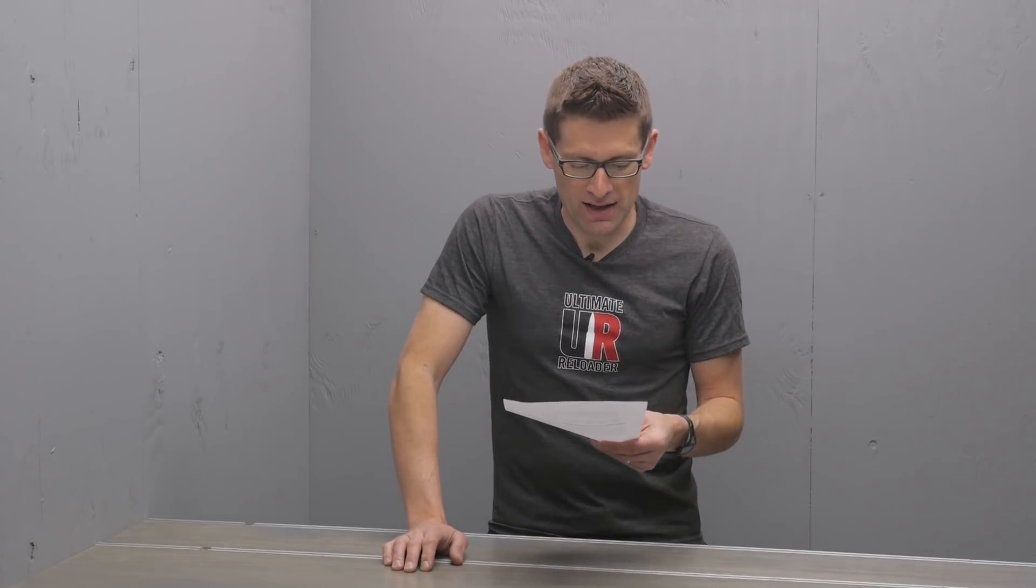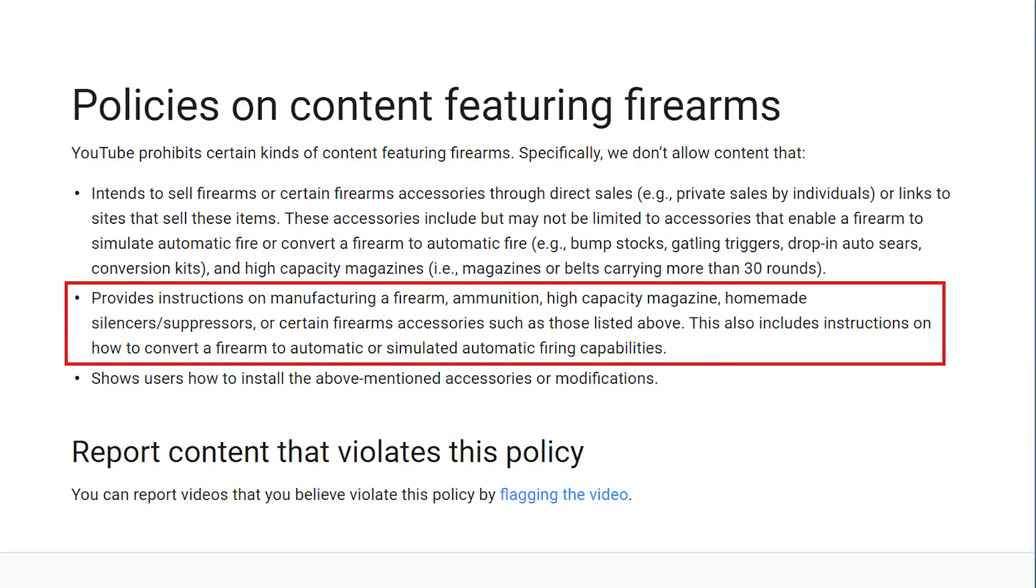The second point is the one that's most troublesome for Ultimate Reloader and that provides instructions on manufacturing a firearm, ammunition, high capacity magazine, homemade silencers or suppressors, or certain firearm accessories such as those listed above.